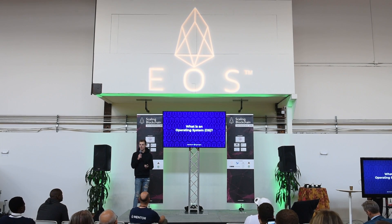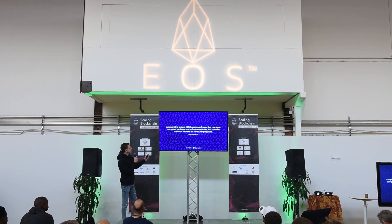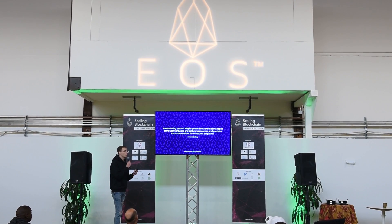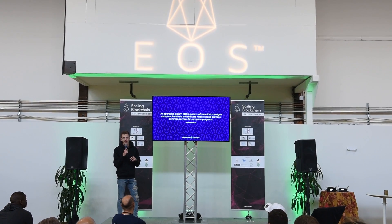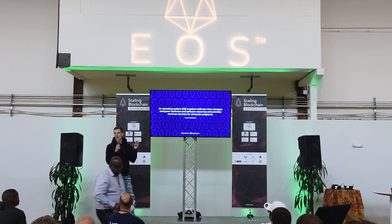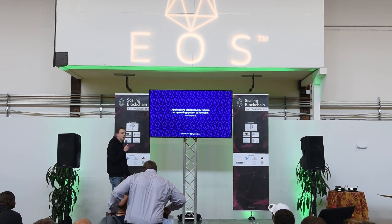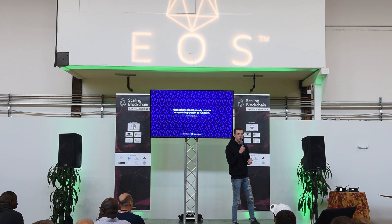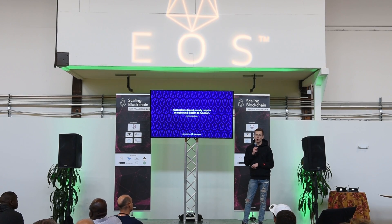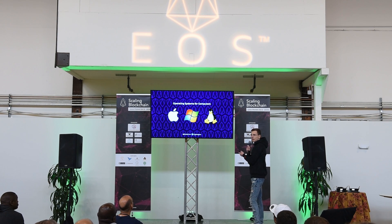So what is an operating system? According to Everipedia — which is a great EOS project — an operating system is system software that manages computer hardware and software resources and provides common services for computer programs. The key point from Everipedia is that applications usually require an operating system to function. In order to use and build the apps on your phone or computer, it all requires an operating system — a way to let users and developers interface with the computer.